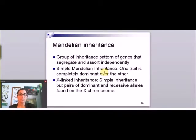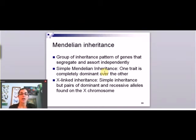Everything we've been talking about so far is broadly called Mendelian inheritance. This basically means that it's following the laws of Mendel — there's segregation of the alleles, there are two copies, two alleles for the gene, and they assort independently. A relatively small number of traits and conditions actually fall under this Mendelian inheritance.